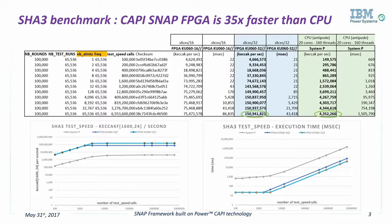You'll note that the chart shows two sets of FPGA results: a 16-slice version and a 32-slice version. This is an indication of the number of parallel pipelines we were able to fit into the FPGA. The 16-slice version takes up less space on the FPGA and was quite simple to implement. Getting the 32-slice version to place, route, and time was a little more challenging. Of course, if we used a larger FPGA, we could fit even more parallel instances, leading to even higher performance. You'll note how well the model scales from 16 to 32 — the performance doubles once the number of elements goes beyond 32.